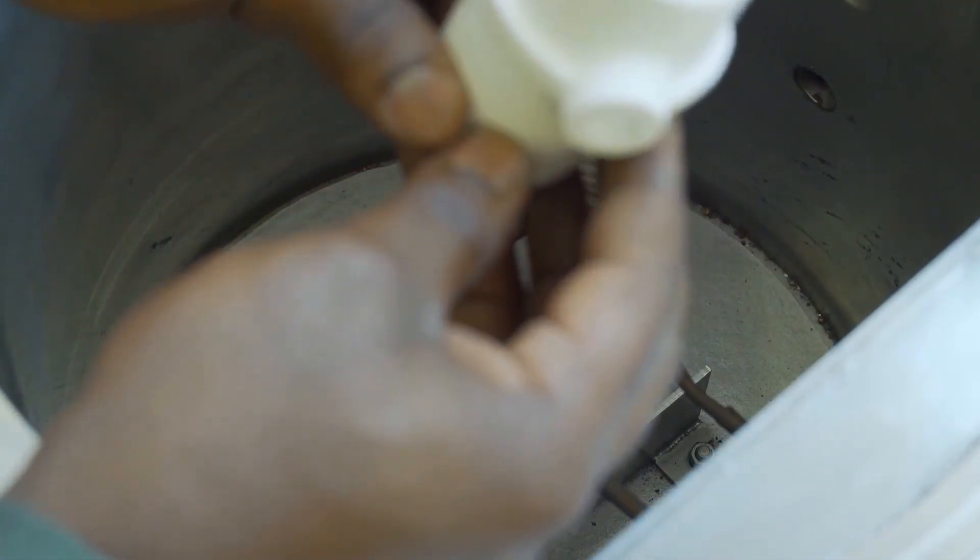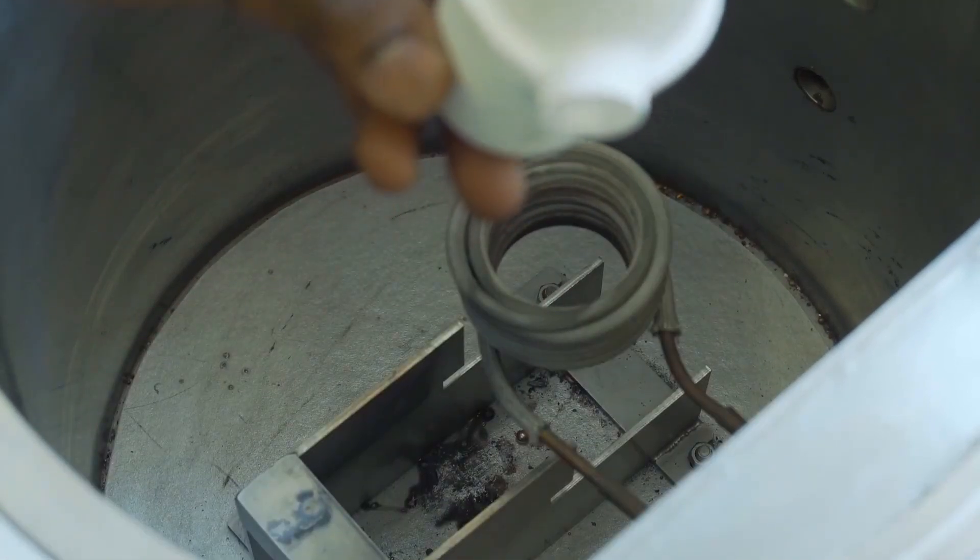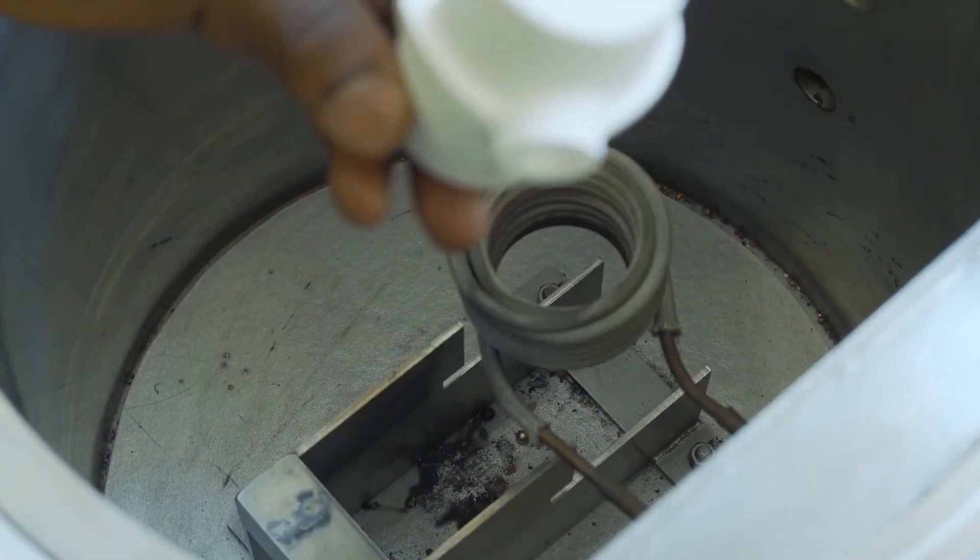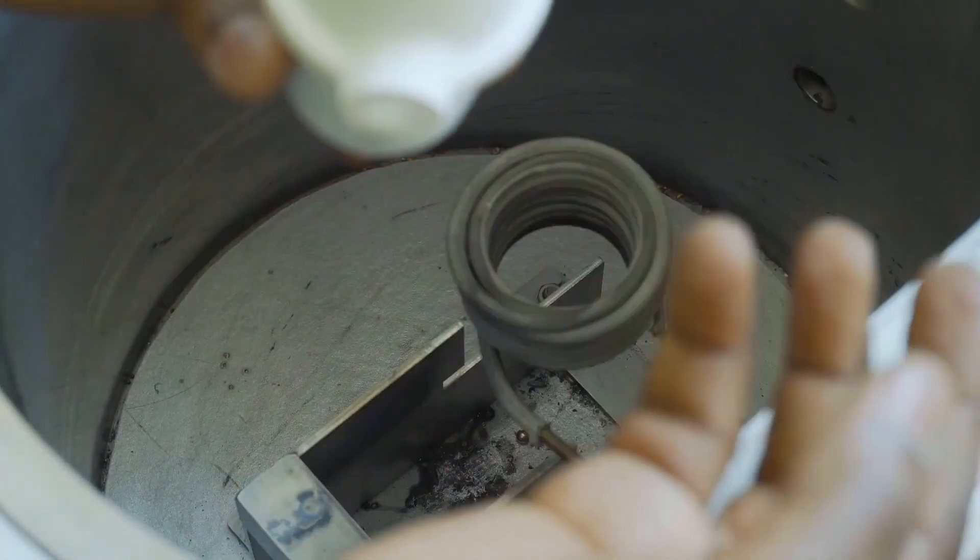Now it's time to charge our starting materials into the crucible. This crucible is called the fused silica alumina crucible. We will be charging in our copper and aluminum scraps. As you can see, this is the copper scraps charged into the crucible, and this is the aluminum scrap charged into the fused alumina crucible.